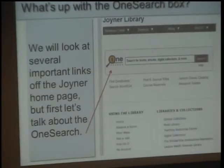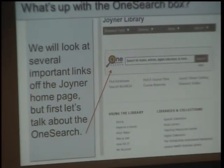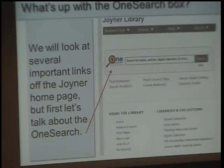On the Joyner Library homepage, what's up with this OneSearch box? It looks like it's going to search for books, articles, and digital collections. Is this all I need? Well, let's talk about this further.